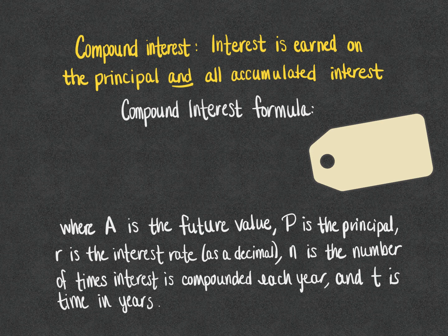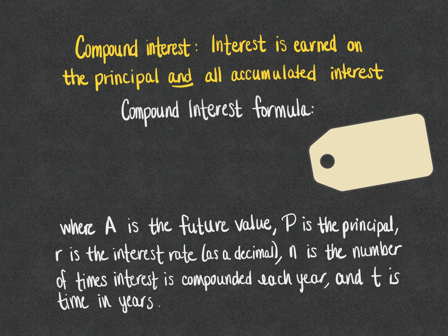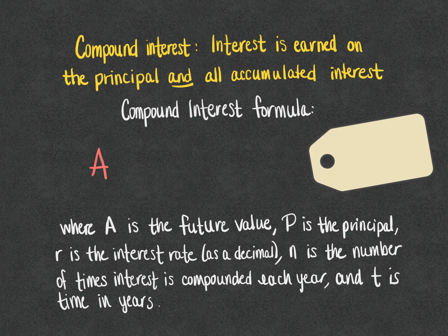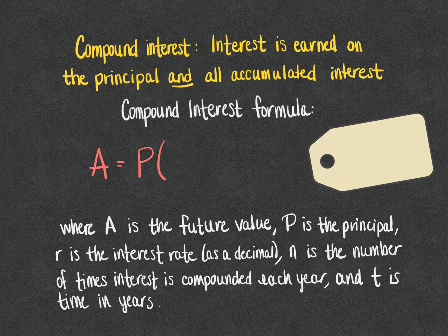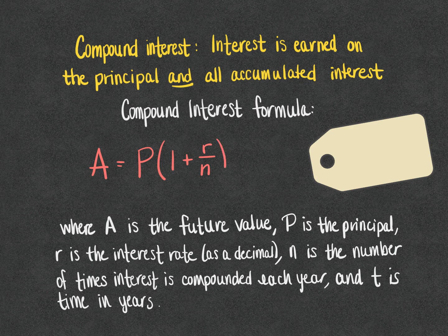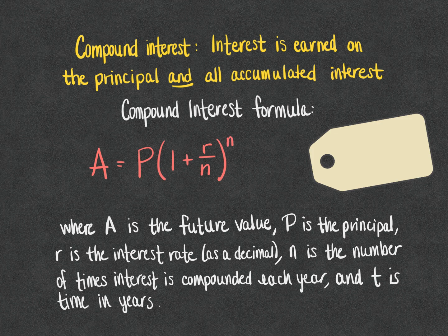The formula for compound interest is as follows: A, the future value or the total amount in the account, is equal to P, the principal, times the quantity 1 plus r, the interest rate, over n, the number of times interest is compounded on a yearly basis, raised to the n times t power, where t is the time in years.